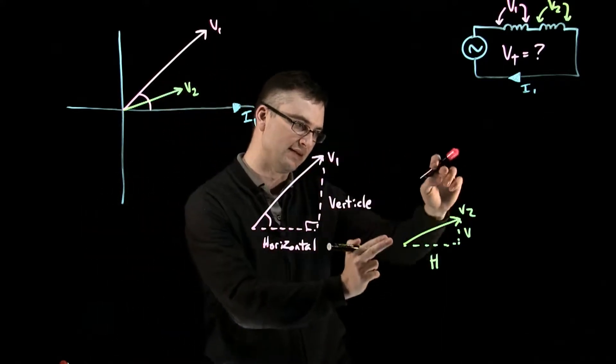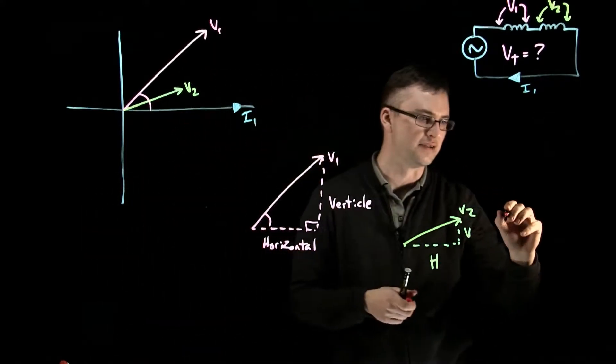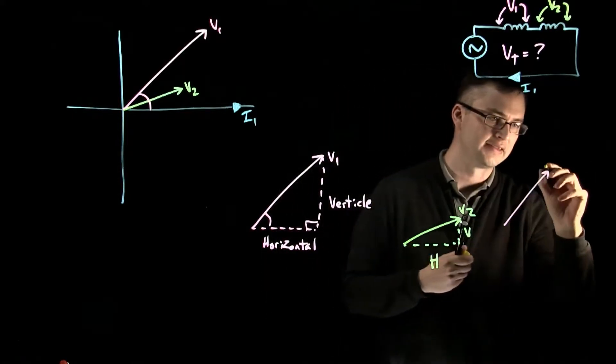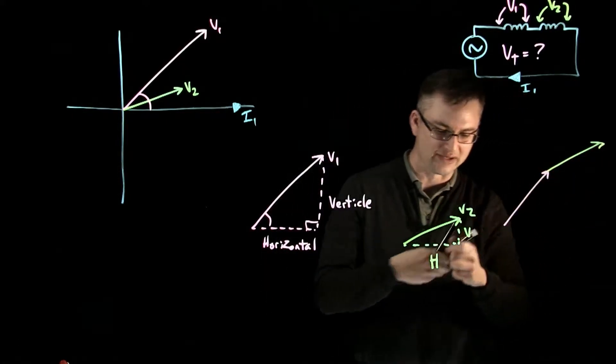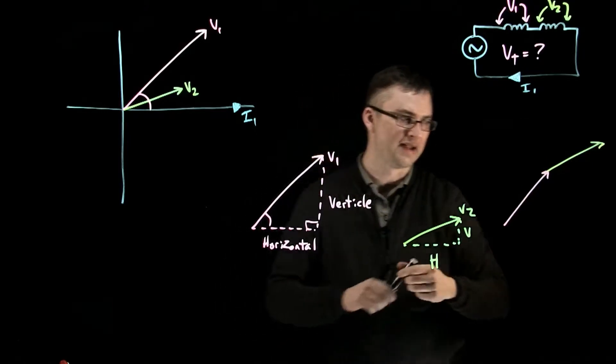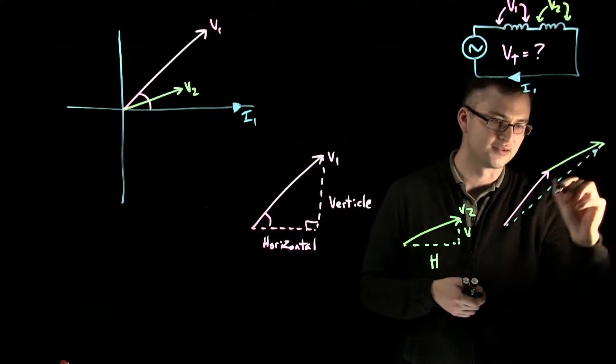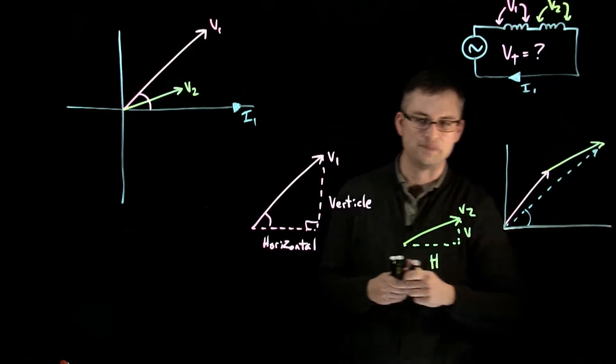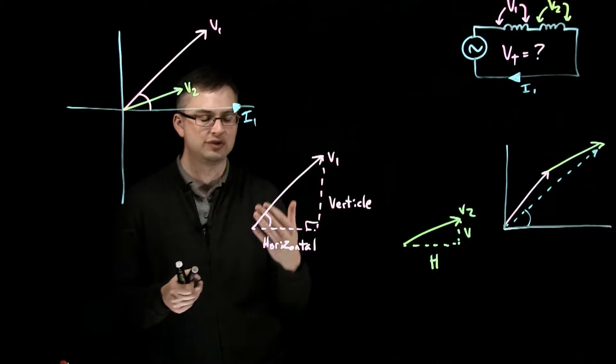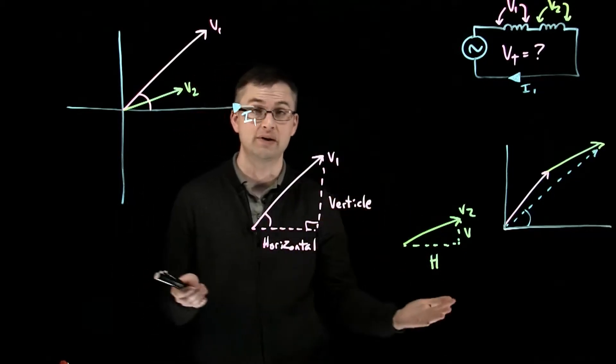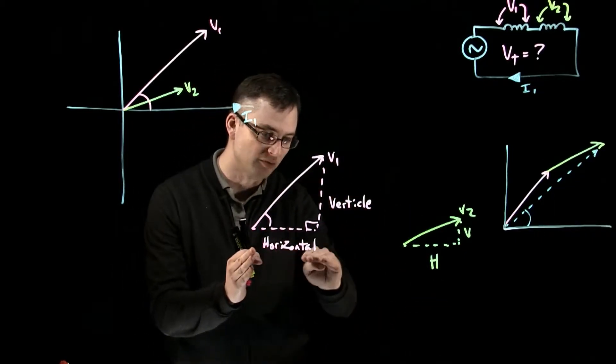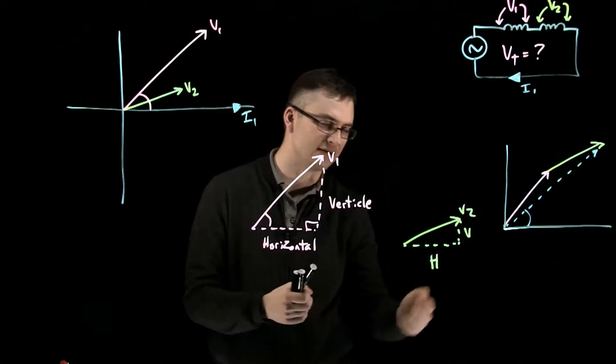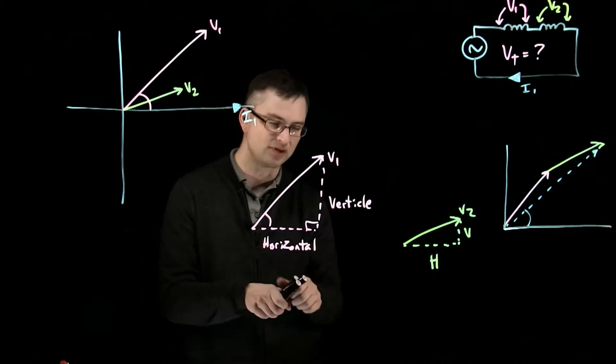Now, if I were to try and add these two together, it would be very difficult. I'd kind of add my tip to tail. And I'd end up having to try and figure out what the length of those two phasors are and what the angle is. And it's kind of a very difficult task to do. But if I do it dealing with just the horizontal and vertical components, it's actually quite easy for me to do. I'm going to add the horizontal because they're at 0 degrees. And I'm going to add the verticals because they're at 90 degrees. And all I've got to do is add those components together.